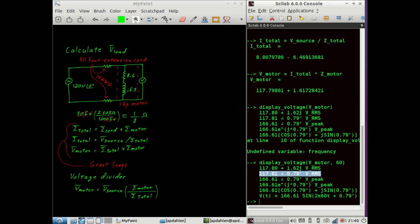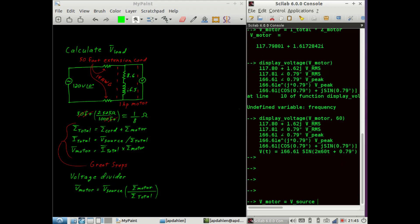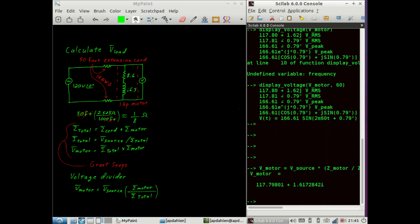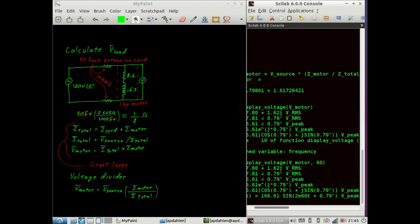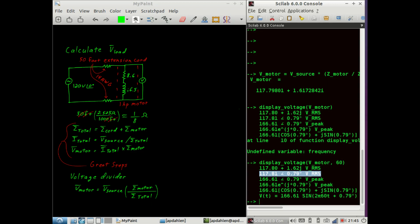Earlier I mentioned we could solve this problem using a voltage divider. Symbolically, we can say that the motor voltage is equal to the source voltage times the impedance of the motor divided by the total impedance. When we do that, we find our phasor representation here is 117.8 volts at an angle of 0.8.